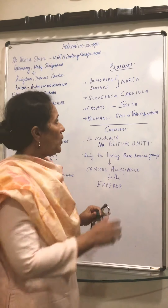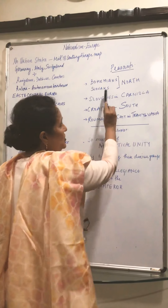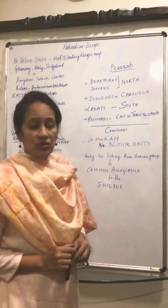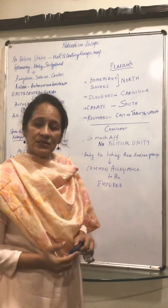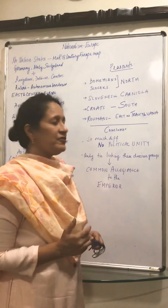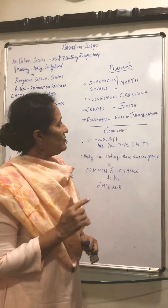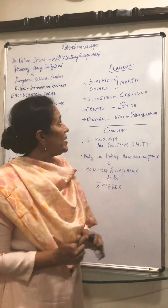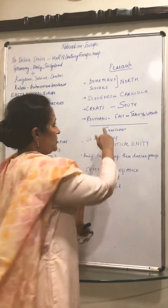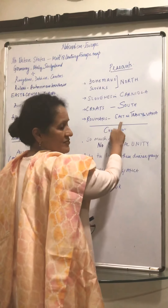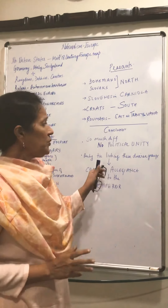Now Part B - the peasants. Within this empire lived many different peasant groups. To the north were the Bohemians and Slovaks; the Slovenes were in Carniola; the Croats were to the south; and the Romanians were in eastern Transylvania. Just remember them by north, south, and east.